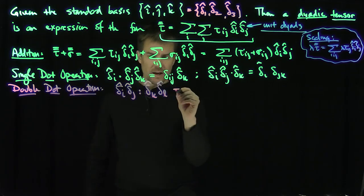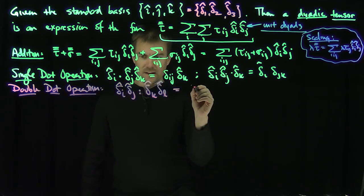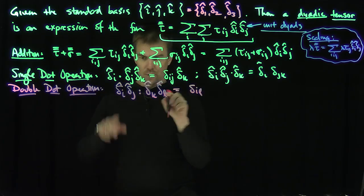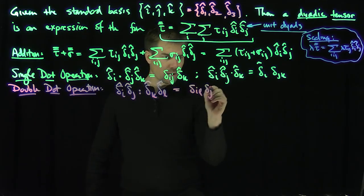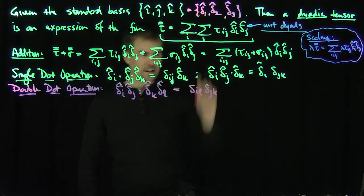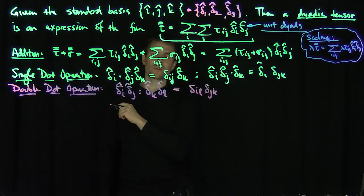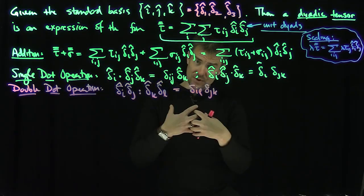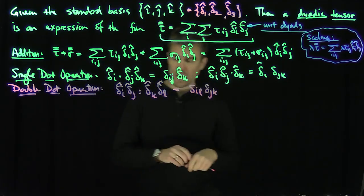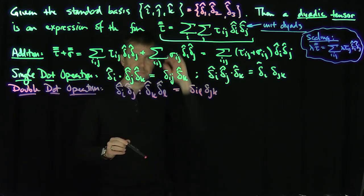This double dot will give delta_il (doing the outers) and then delta_jk (the inner). So when you do a double dot product of two dyadic tensors, you get back down to a scalar quantity.